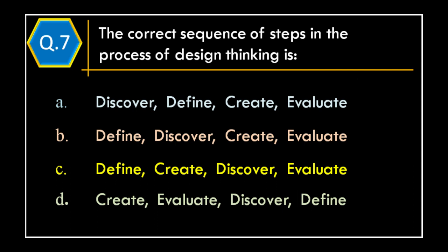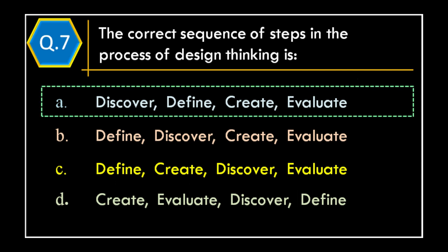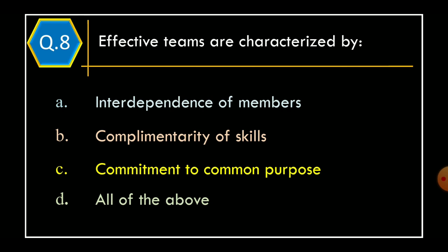Question 7: The correct sequence of steps in the process of design thinking is - Option A: Discover, Define, Create, Evaluate; Option B: Define, Discover, Create, Evaluate; Option C: Define, Create, Discover, Evaluate; Option D: Create, Evaluate, Discover, Define. The correct option is Option A: Discover, Define, Create, Evaluate.